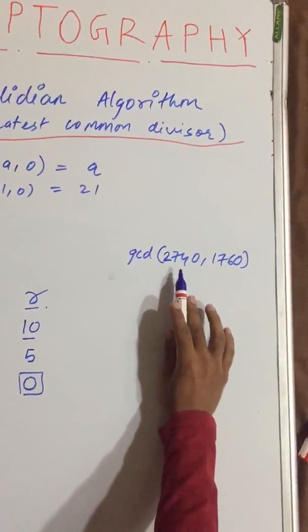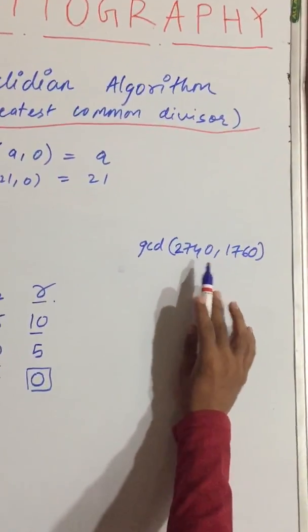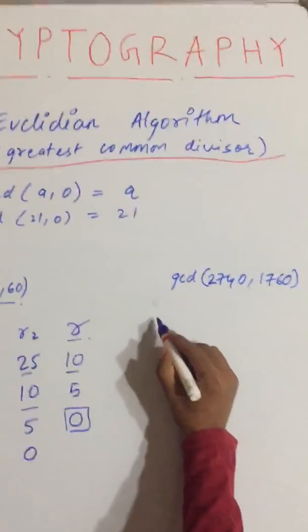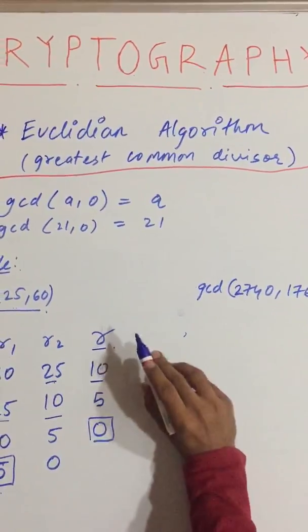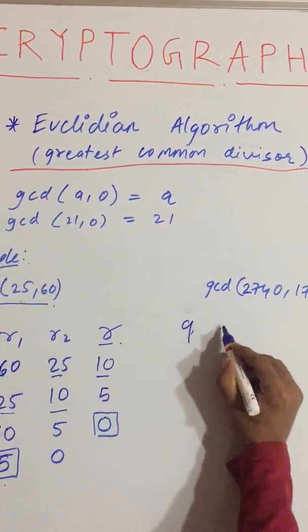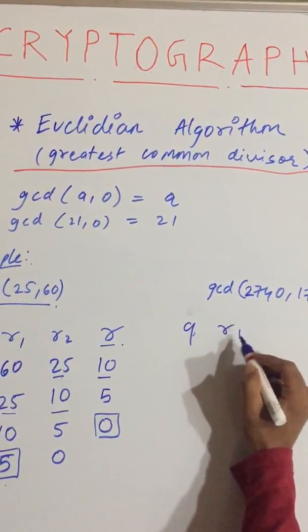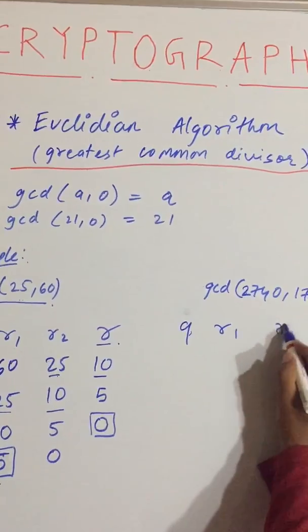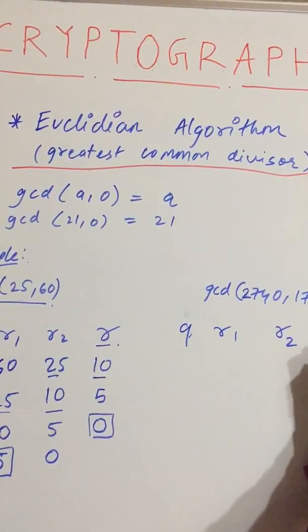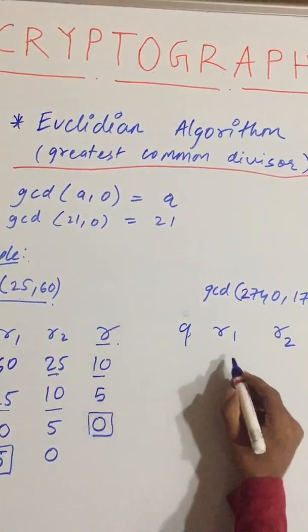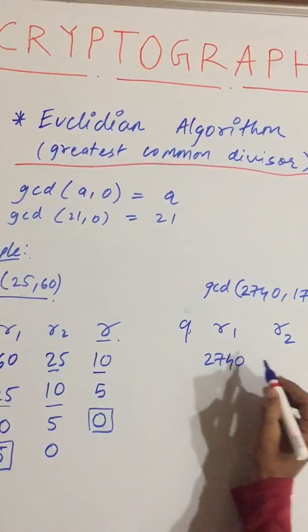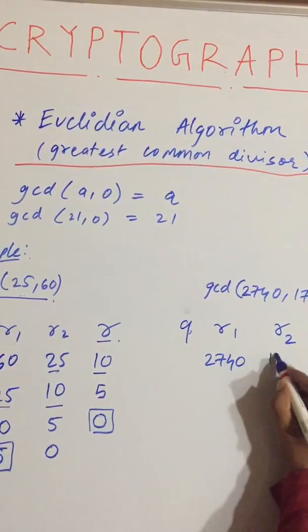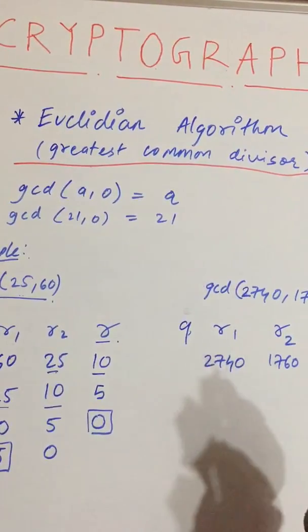Now solve GCD of 2740 and 1760. Just do the same process — set up columns Q, R1, R2, and R. We will take R1 as 2740 and R2 as 1760.